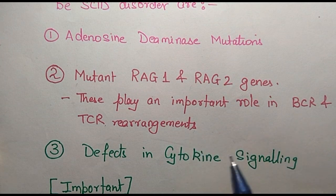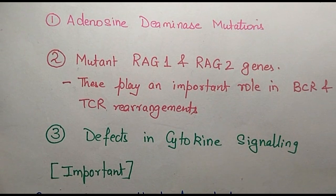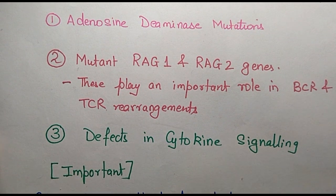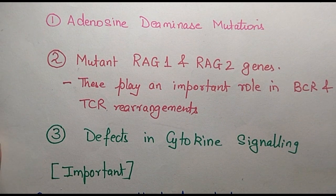Apart from this, defects in cytokine signaling have also been attributed to the development of the SCID phenotype. As for treatment, it is technically possible to cure SCID if a bone marrow transplant is performed. Bone marrow transplants do happen, but they are not easy. If the bone marrow transplant is done successfully, the individual can definitely survive.